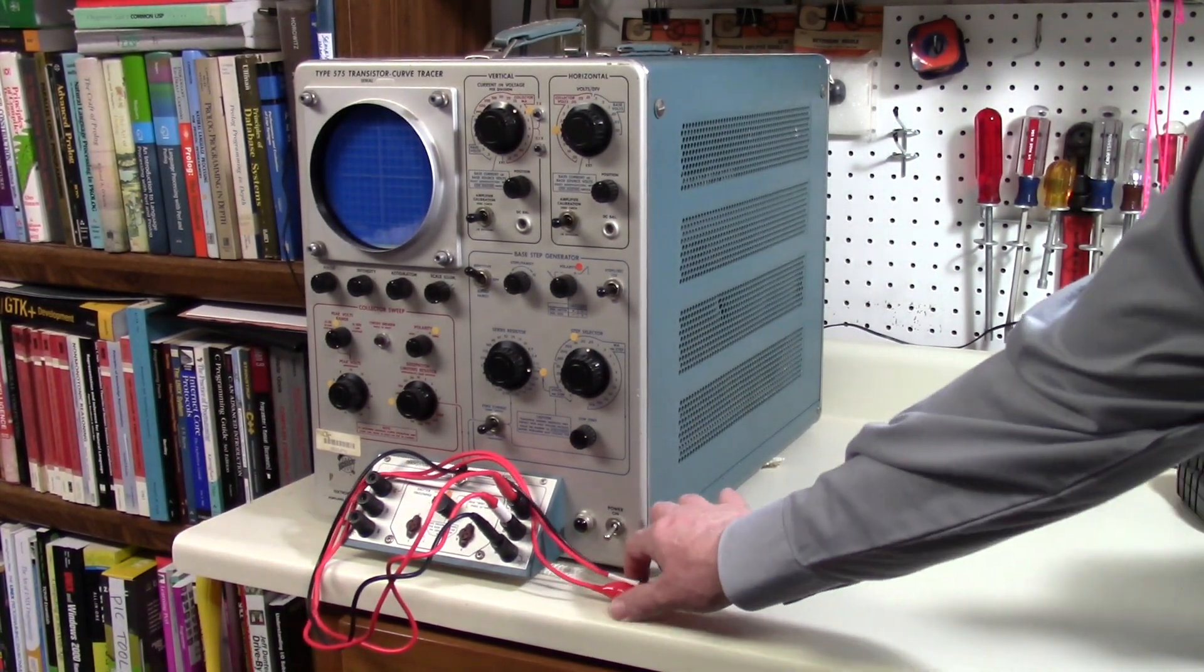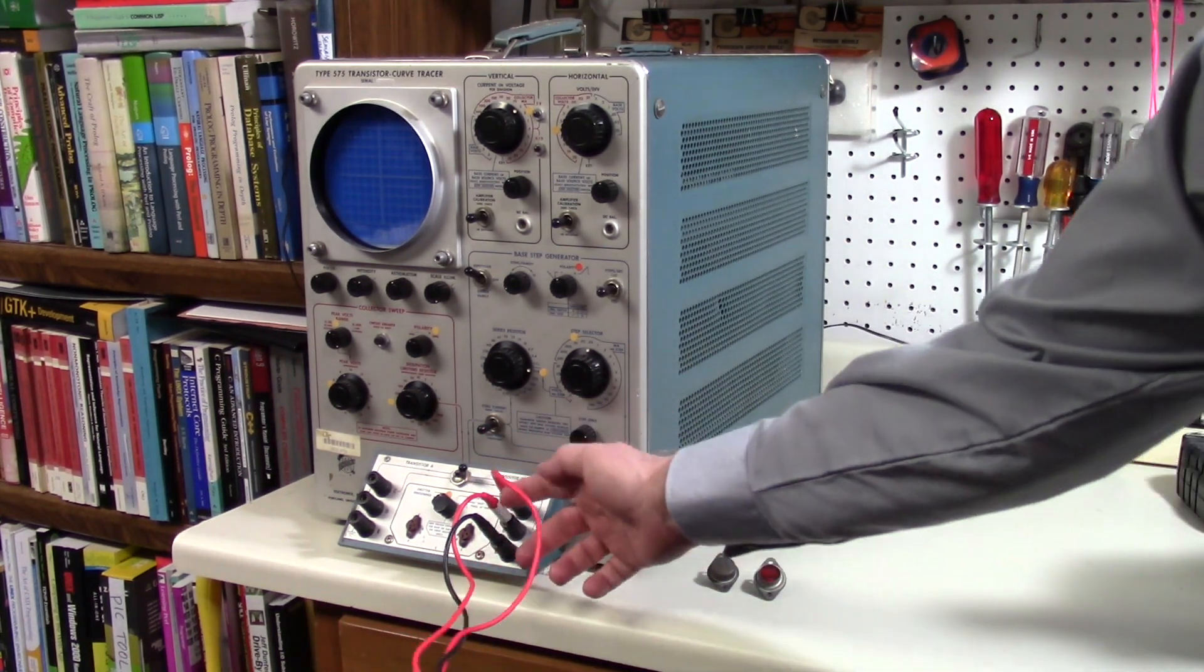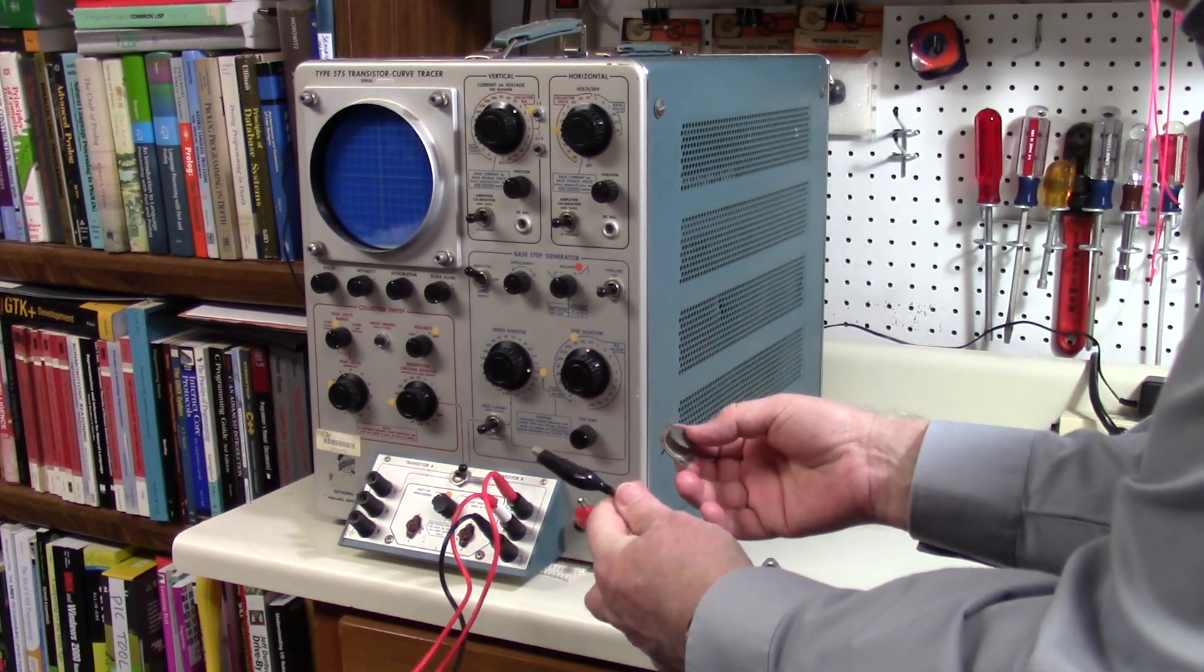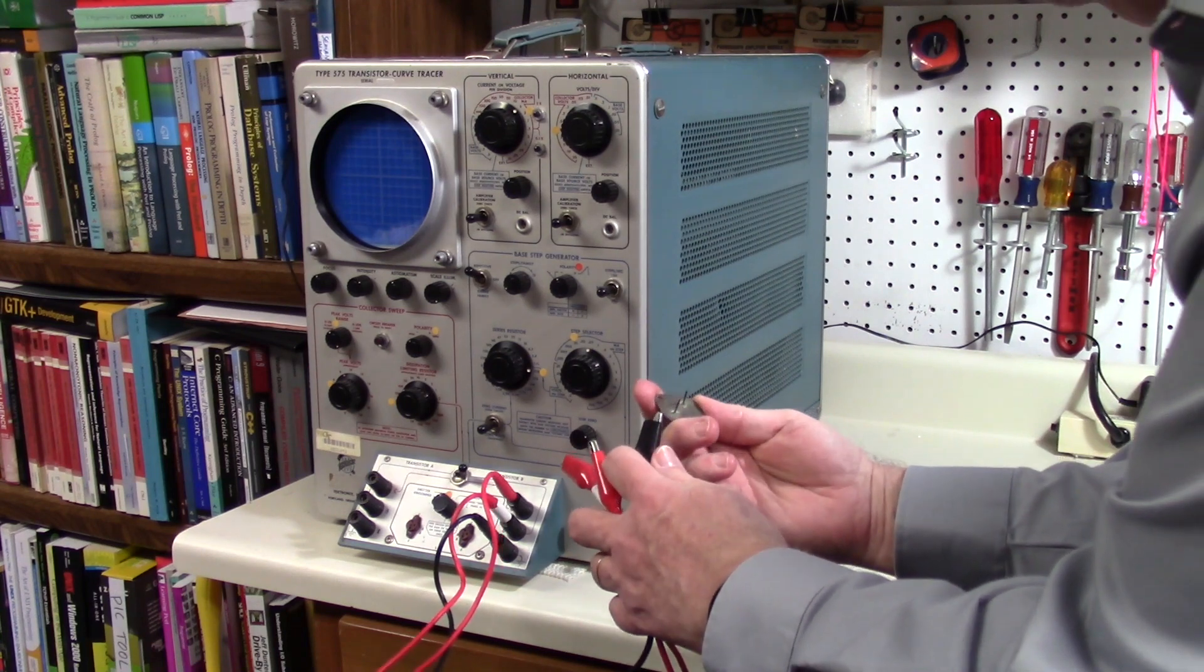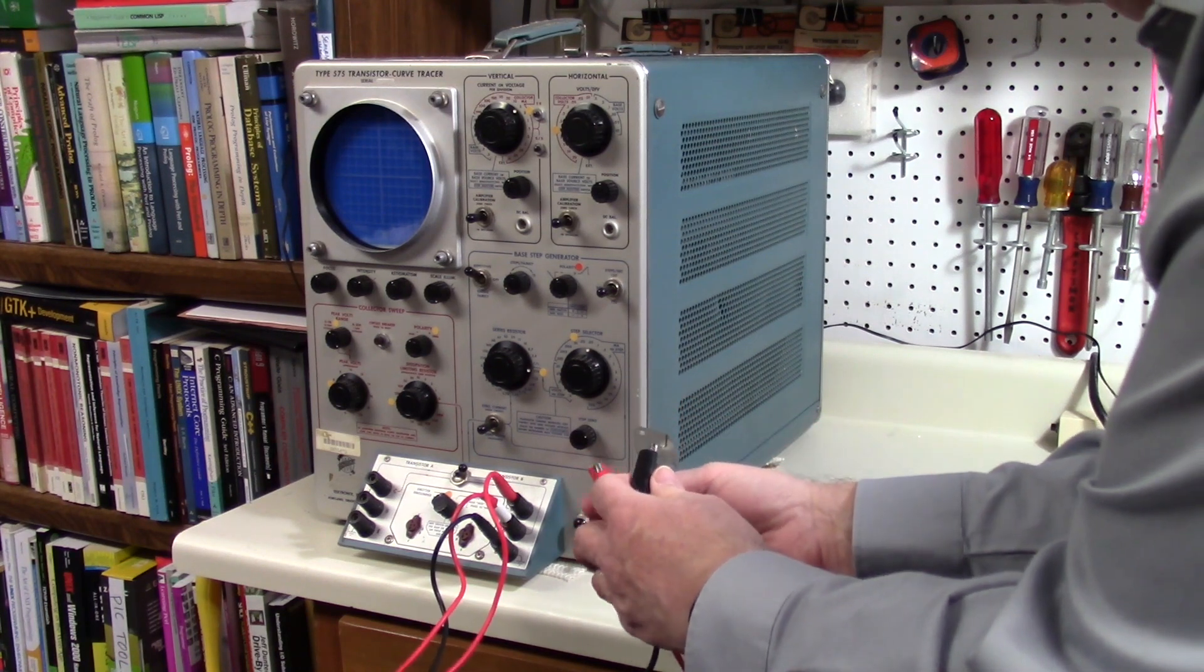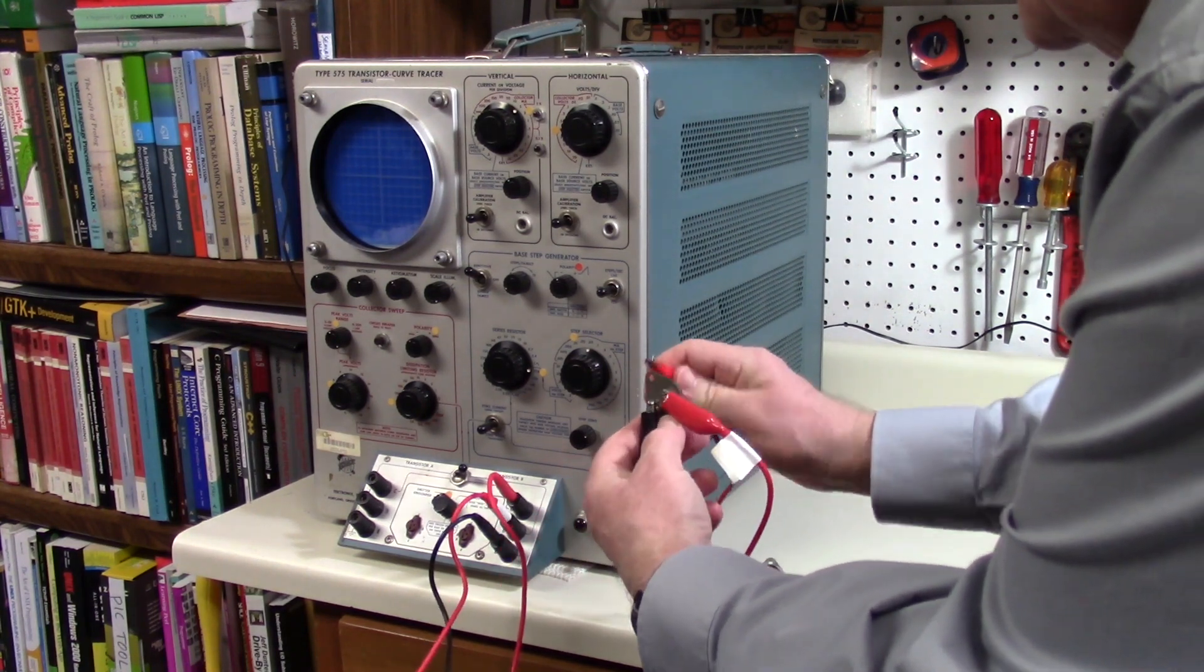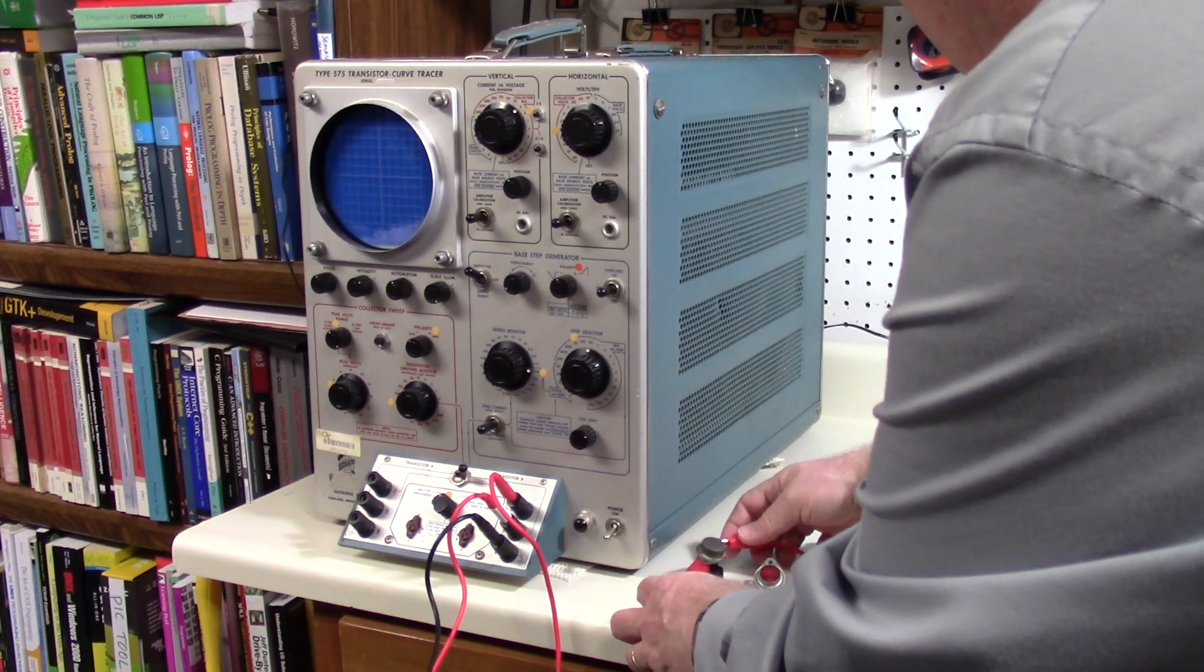I have three test leads, collector red, emitter black, and base red marked with white. I'm going to hook up the regular transistor here, the one that works. On a TO3 case you put the connections below center and then you have emitter, base, and collector. There it is.